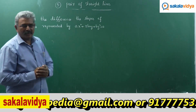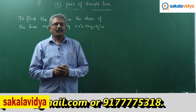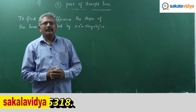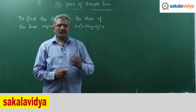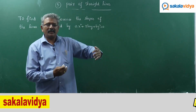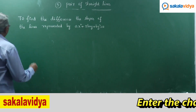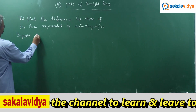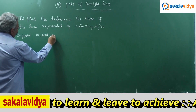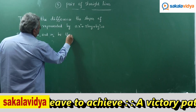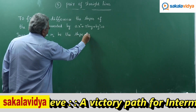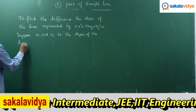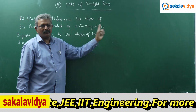In the previous episode we discussed the sum of the slopes and product of the slopes of the lines represented by Ax² + 2hxy + By² = 0. Suppose M1 and M2 are the slopes of the lines which represent this equation.